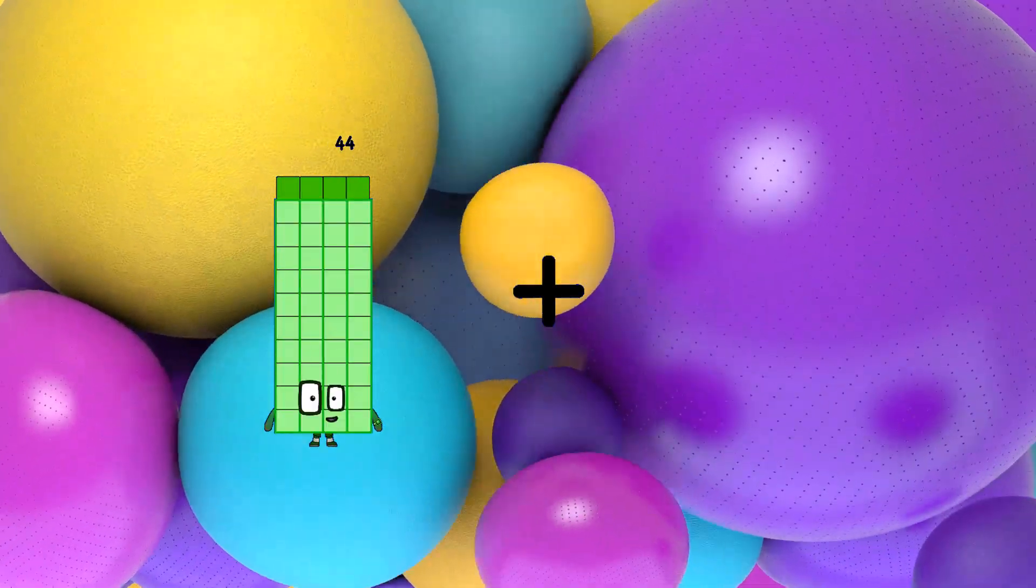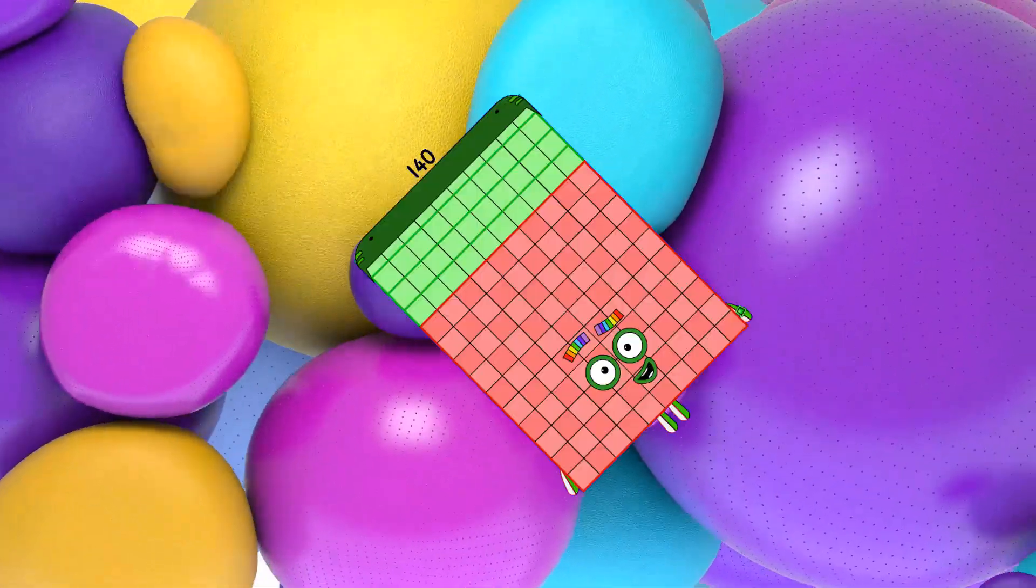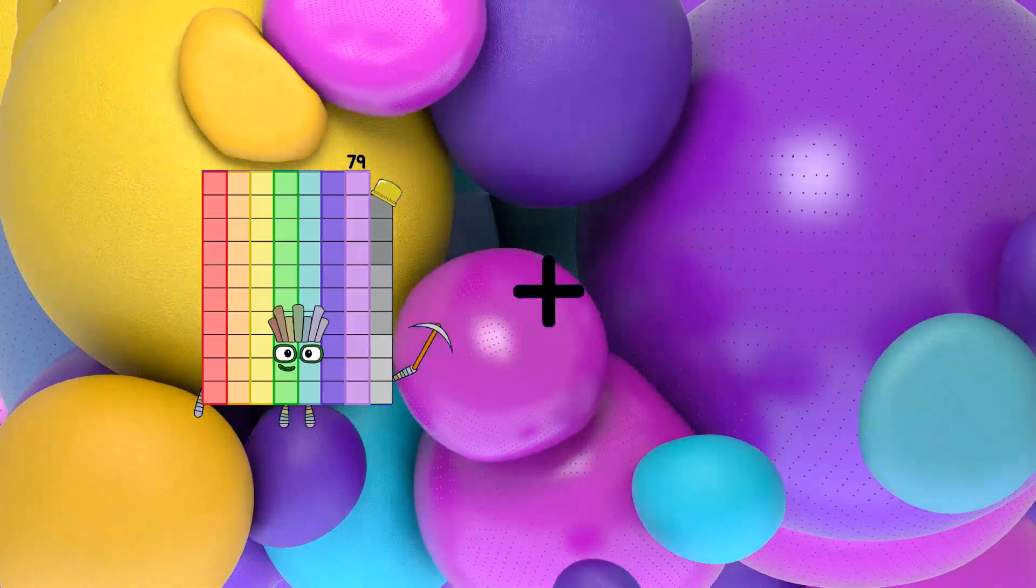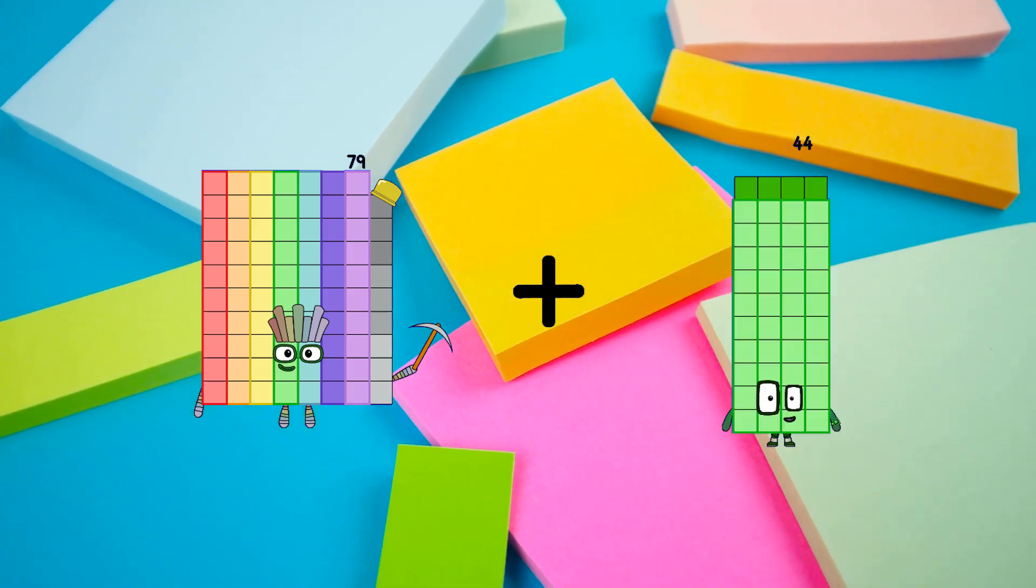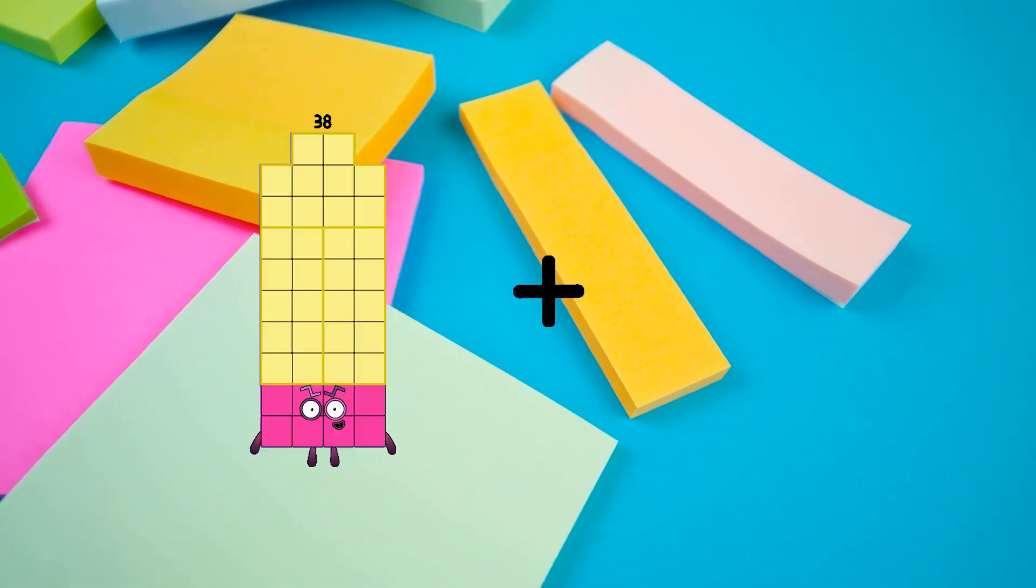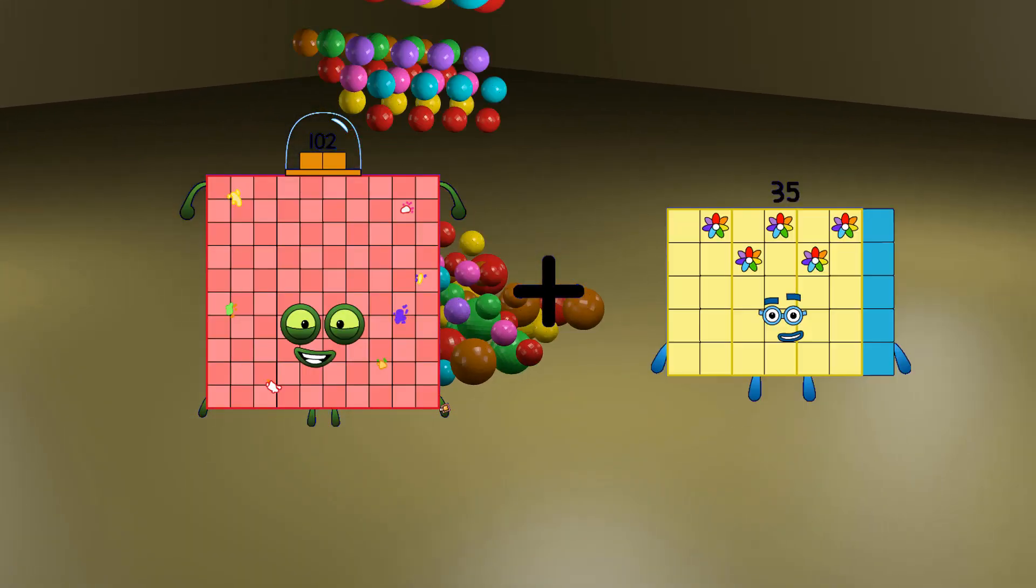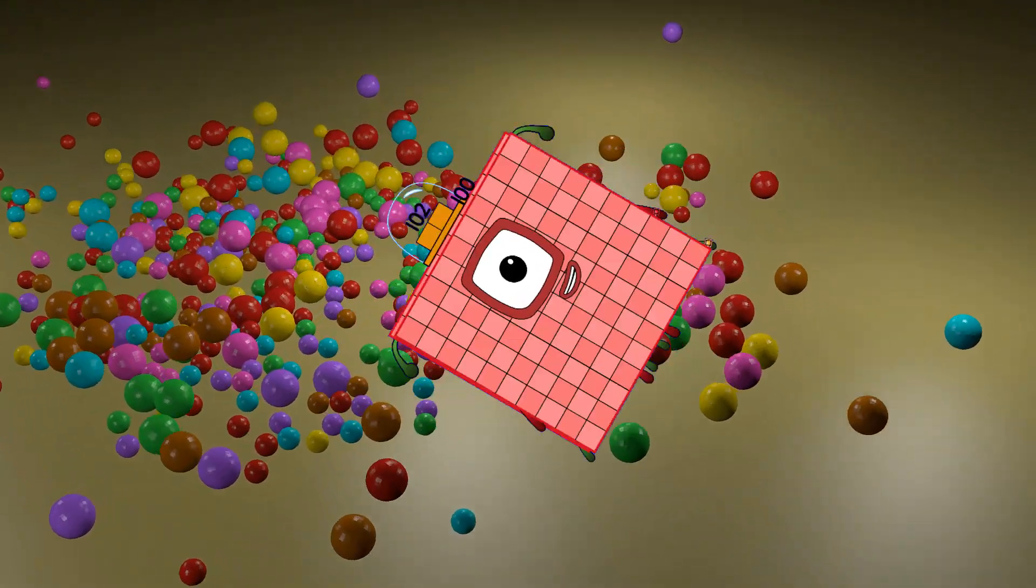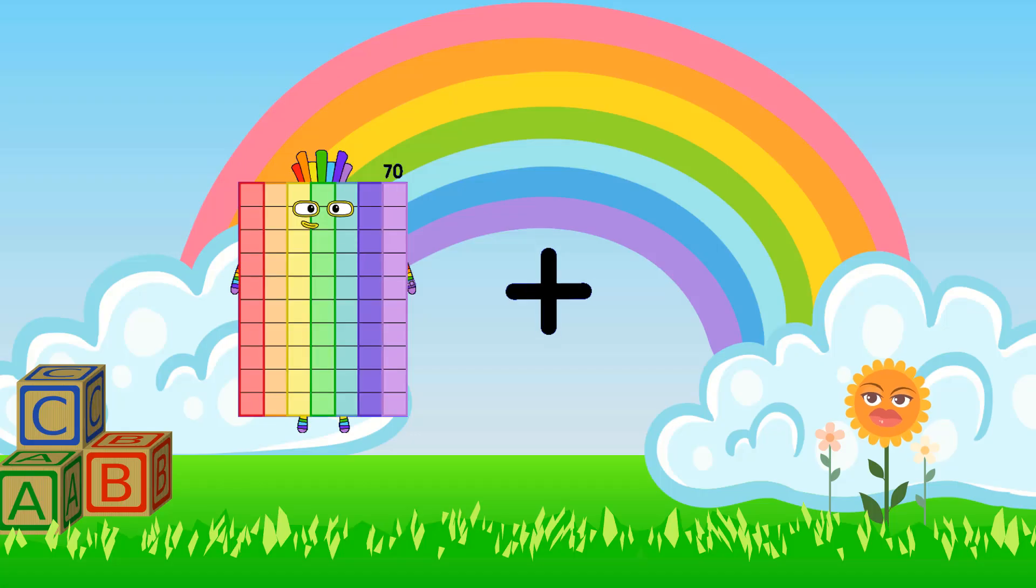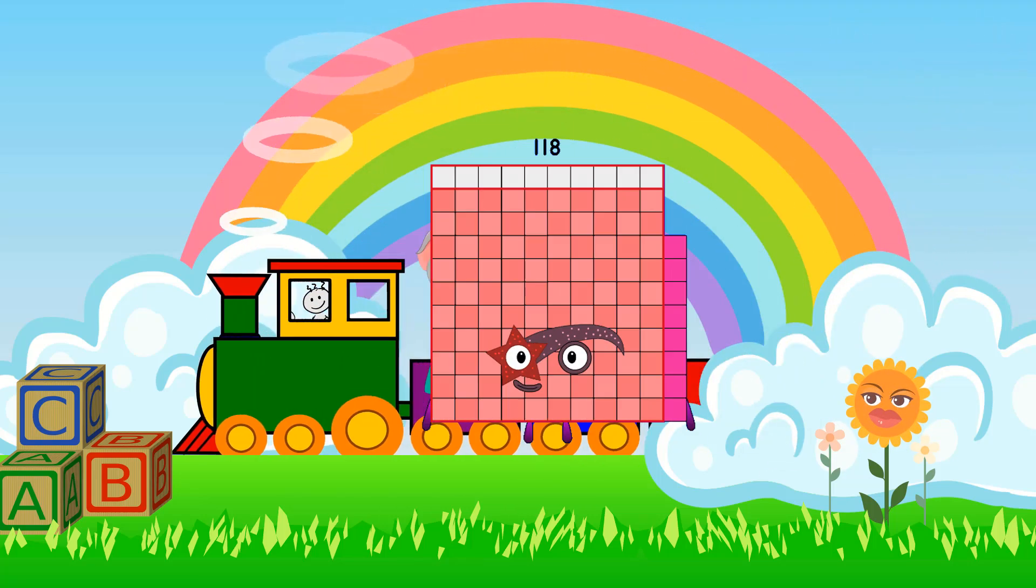44 plus 96 equals 140. 79 plus 23 equals 102. 102 plus 100 equals 202. 70 plus 48 equals 118.